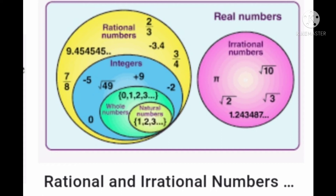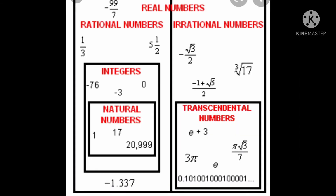The second part is irrational numbers. Root ten, root three, and root two are also irrational numbers. Pi is also an irrational number, and 1.243487... is also an irrational number. According to the definition of irrational numbers, a number which cannot be written in the form of P by Q is called an irrational number. So root 2, root 3, and root 10 cannot be written in the form of P by Q, so these numbers are irrational numbers. Pi is also an irrational number.